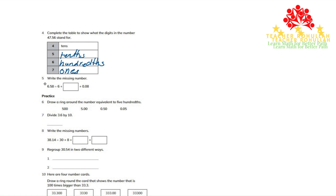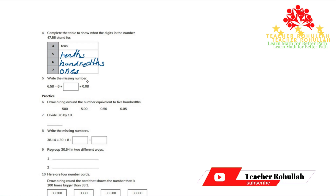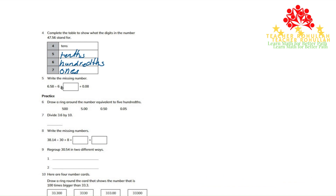In question 5 it says, write the missing number. Something is added by 6, then added by 0.08 and we get 6.58. So 6 plus 0.5 plus 0.08 will give us 6.58. The number that comes in the blank is 0.5.